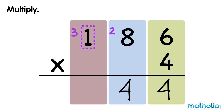Finally, multiply the hundreds by 4 and add the regrouped hundreds. 100 times 4 equals 4 hundreds. Plus 3 hundreds equals 7 hundreds. 186 times 4 equals 744.